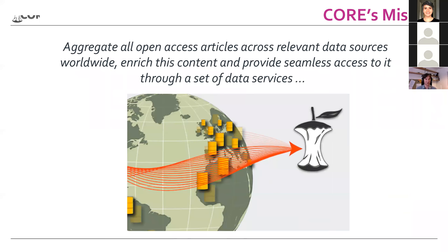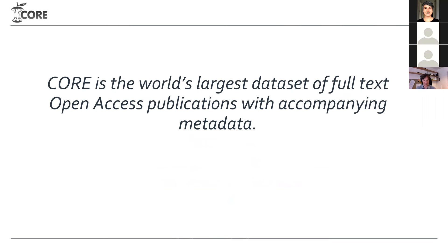CORE is a tool which basically tries to aggregate all open access articles across all sorts of data sources worldwide. We want to enrich this content and provide seamless access to it through a set of data services. Because we have a lot of content, we are facing lots of challenges in synchronizing it. It is the world's largest dataset of full-text open access publications with accompanying metadata.